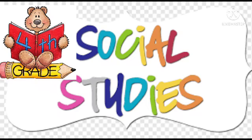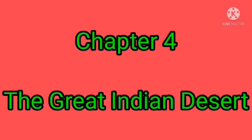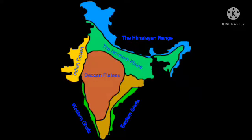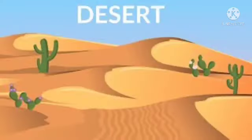Hi children, I hope you all are fine at home with your parents. Today we are going to discuss chapter 4, The Great Indian Desert. In chapter 1, we discussed some of the landforms in India — that means physiographic divisions. There are six types: the Northern Plains, the Northern Mountains, the Great Indian Desert, the Coastal Plains, the Southern Plateau, and the Islands. From chapters 2 and 3 we discussed the Northern Mountains and Northern Plains. From this chapter, we discuss the Great Indian Desert.